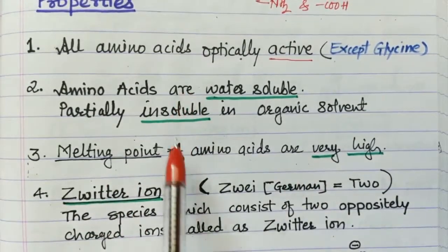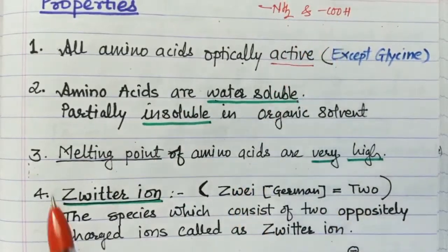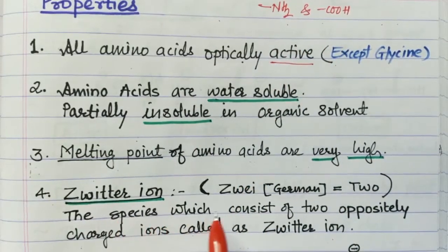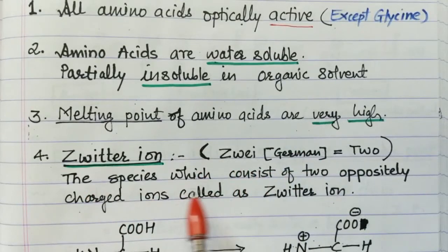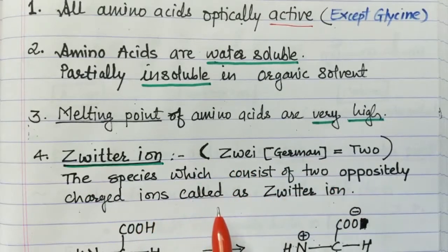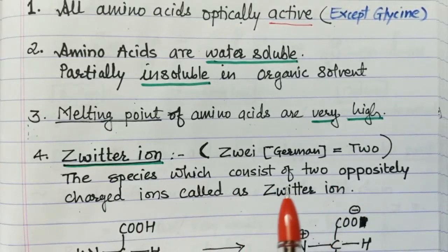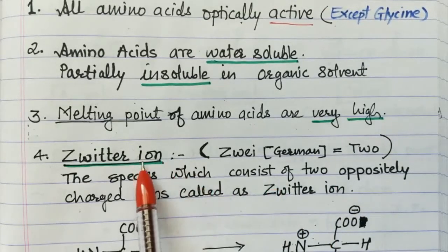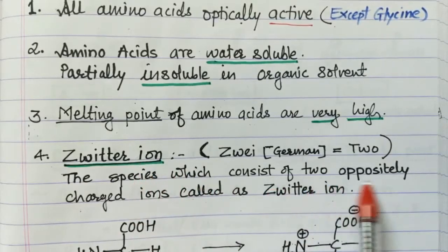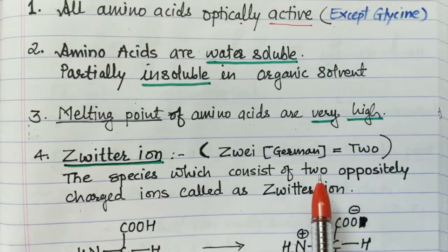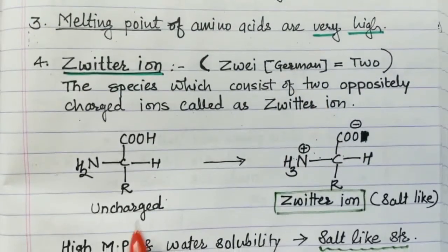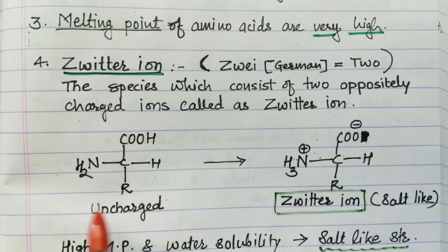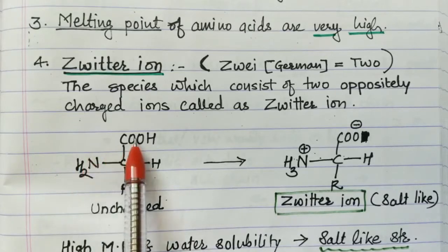These two properties are different compared to amines and carboxylic acids due to the zwitterion form. 'Zwitter' is a German word meaning 'two' — a species which consists of two oppositely charged ions is called a zwitterion. Amino acids exist in zwitterionic form, having two oppositely charged ions — a cation and an anion. The general structure of amino acid is uncharged, but an internal acid-base reaction takes place.